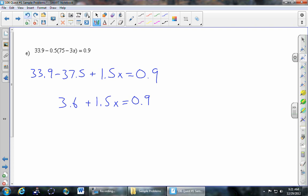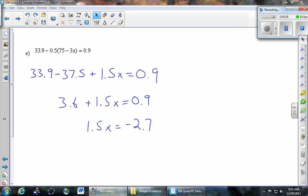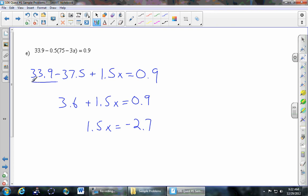And then subtract 3.6 from both sides. Then we get negative 2.7. All right. And hopefully you caught my mistake. So the mistake was up above when we did 33.9 minus 37.5. That should have been a negative answer. So this should be negative 3.6. So we actually add 3.6 to both sides.